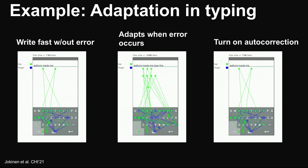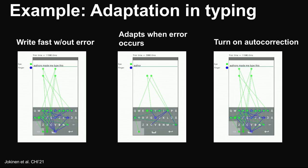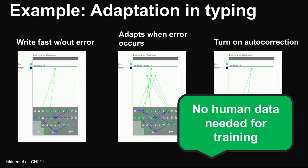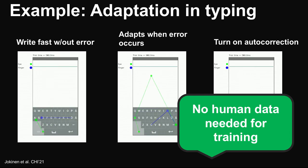The benefit of reinforcement learning for HCI is that we can change the design and a new behavior emerges. Here, autocorrection was turned on and the agent learned to type in a faster and more relaxed way, relying more on autocorrection. Remarkably, and in stark contrast to the now popular supervised learning paradigm, in reinforcement learning no human data is required for training an agent.